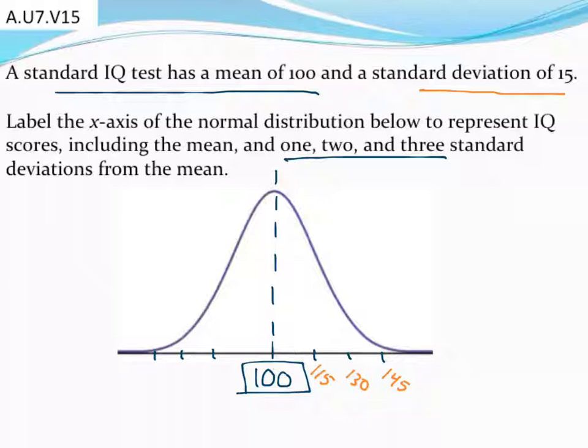On the other hand, if I subtract 15 each time, 85 would be my IQ score for one standard deviation below the mean. Subtract 15 again, that would leave me at 70. And if I subtract 15 again, there's 55.